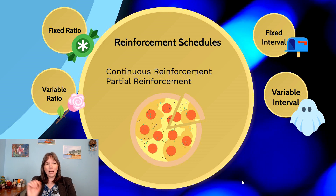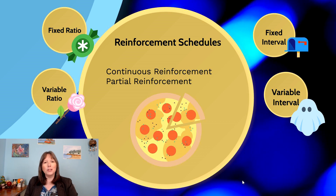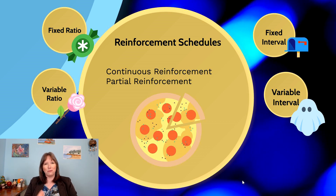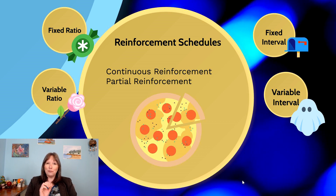There are four types of partial reinforcement schedules I'm going to talk about. I'll discuss them in terms of reinforcement, not punishment, just to keep it straightforward — but keep in mind these could all work for punishment as well. They are the fixed ratio, variable ratio, fixed interval, and variable interval.